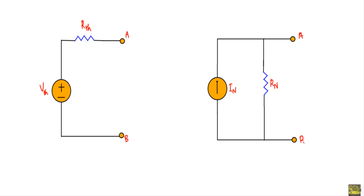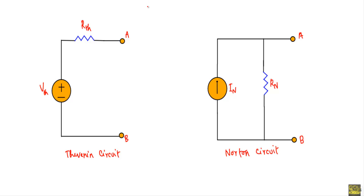The Thevenin and Norton equivalent circuits are duals of each other — if I can draw the Thevenin circuit I can draw the Norton circuit, and vice versa. We convert between them using the source transformation theorem.